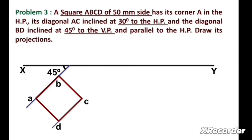Now we draw vertical lines from points A, B, C, and D as shown in the figure. We mark these projected points as A dash, B dash, C dash, and D dash.